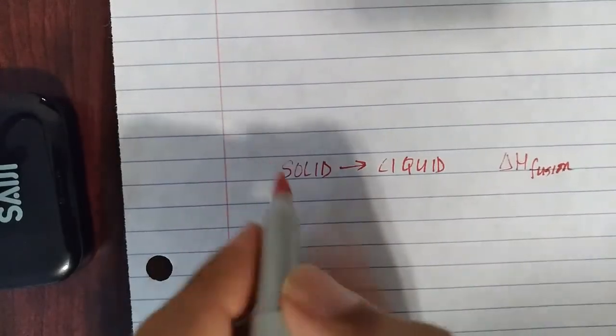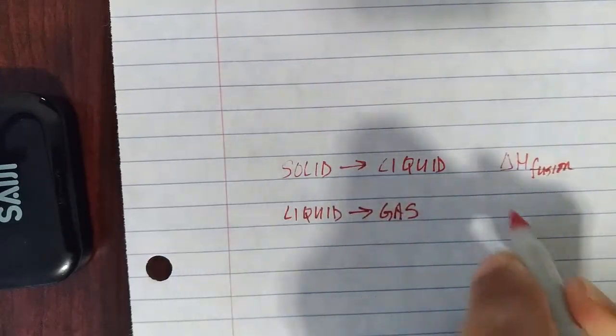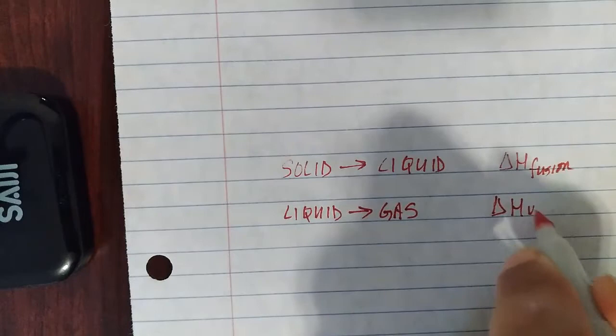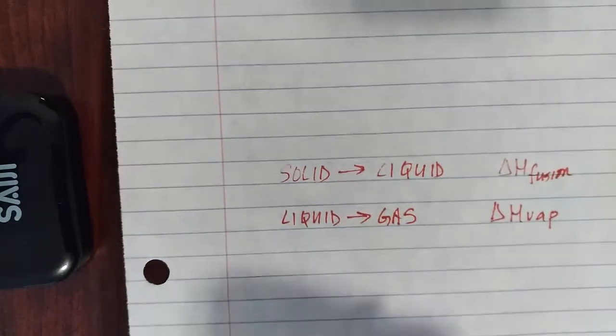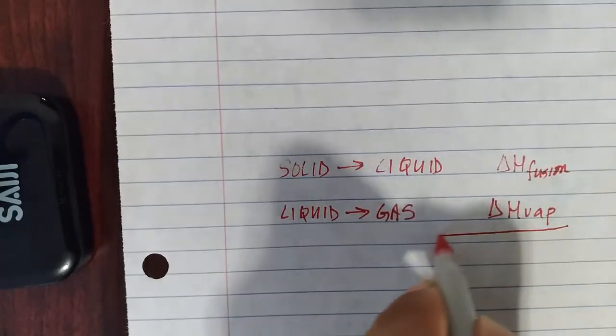And then we also have liquid to a gas. A liquid going to a gas is vaporization. So there's a delta H of vaporization involved in that transition.